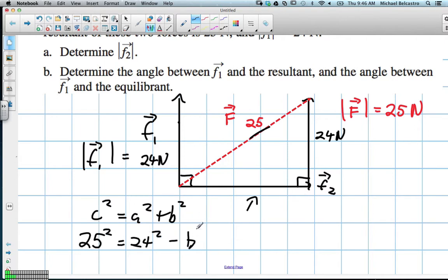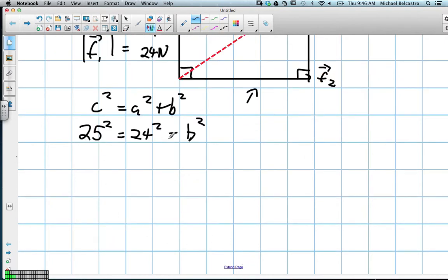Force 2 will be known as B. Plus. So we have 25 squared, subtract 24 squared is equal to B if we root all of it.